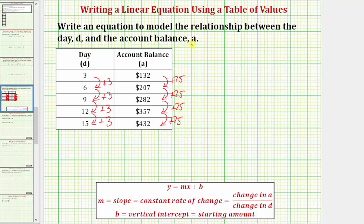We'll use a linear equation in the form Y equals MX plus B, which is slope-intercept form. But in our case, we're not using X and Y as the variables, we're using D and A.